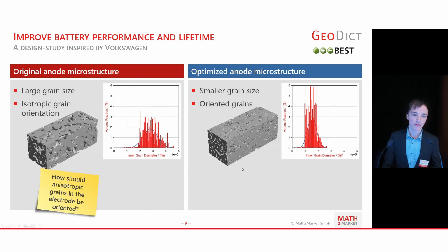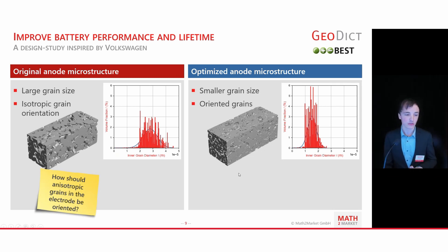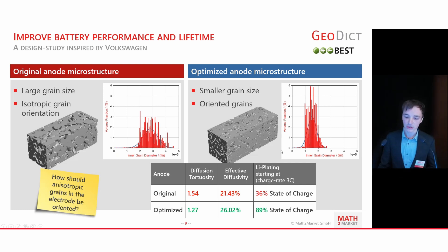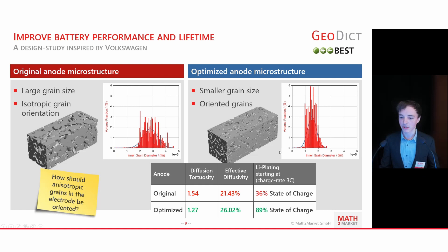One of our case studies made with Volkswagen investigated the influence of grain size and grain orientation on battery performance — or more simply, how anisotropic grains in the electrode should be oriented. The answer is that by orienting the grains in a certain direction, you can decrease the diffusion tortuosity while also increasing the effective diffusivity. Therefore, lithium plating starts at a much higher state of charge, which improves battery lifetime.